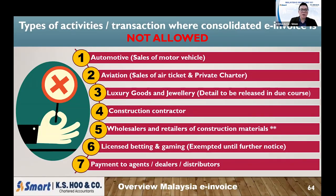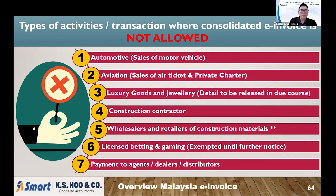There are certain industries that are NOT allowed to issue a consolidated invoice. This means when you are in these businesses, even if your customer is an individual, you are still required to get their information and issue an individual e-invoice to them. The first is the automobile industry — sale of motor vehicles. If a customer wants to buy a car or motorcycle, even though they are an individual not running a business, you are still required to issue an e-invoice to them. You cannot issue a normal invoice and consolidate it at month end.